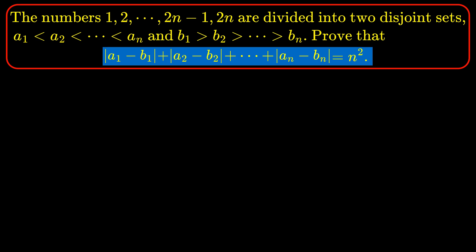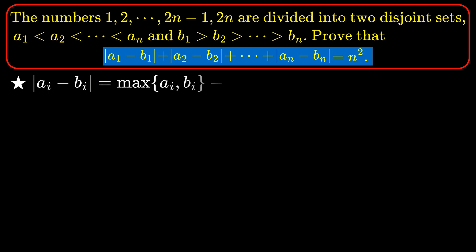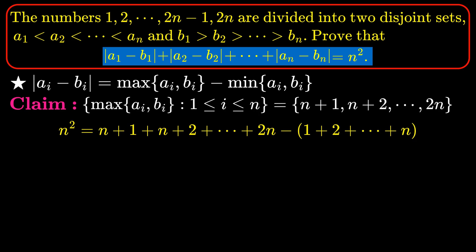I've also found a pretty elegant proof from Wikipedia and from a website CutTheKnot — link in the description if you want to check them out. To make our argument cleaner, note that |a_i - b_i| can be formulated as max(a_i, b_i) minus min(a_i, b_i), so it is always positive. Drawing similarity from our previous solution, it suffices to prove that the set of maximums — max(a_i, b_i) — must coincide with the set {n+1, ..., 2n}, because n² arises from summing n+1 to 2n then subtracting 1 to n.